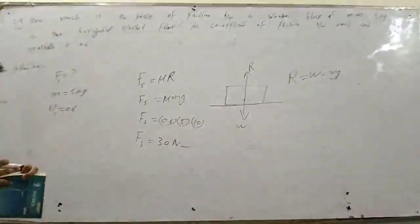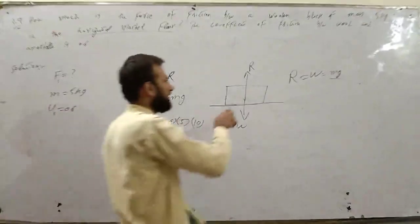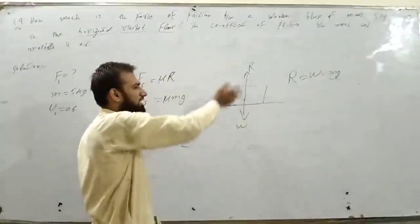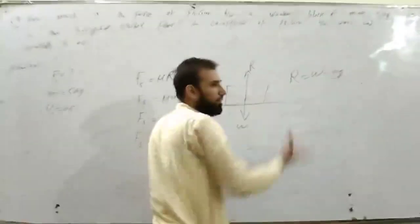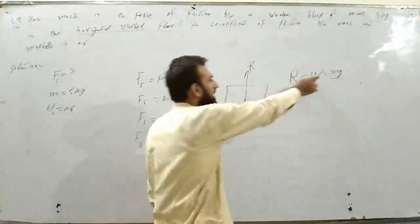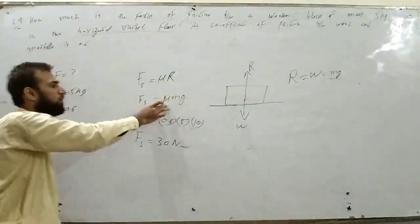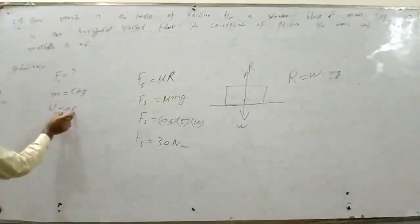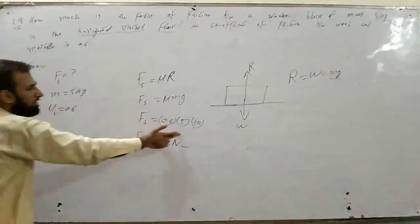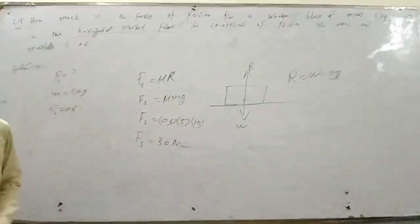Object horizontal surface पे है, तो normal reaction force weight के equal होती है - R is equal to W। Weight is equal to Mg। R की जगा पे Mg put कर सकते हैं। Mu coefficient of friction, M mass 5, g gravitational acceleration 10 - इनको multiply किया, आंस आ गया।